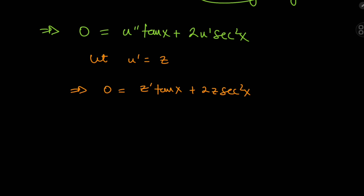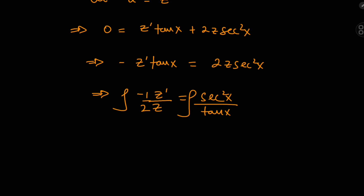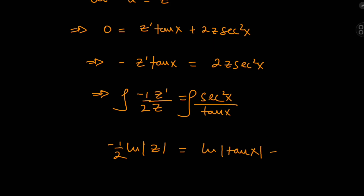This is a nice separable differential equation in z and x. Separating variables gives −z'/z = 2·sec²(x)/tan(x). Integrating both sides, we get −(1/2)·log(z) = log(tan(x)) + log(a), where a is a positive constant.